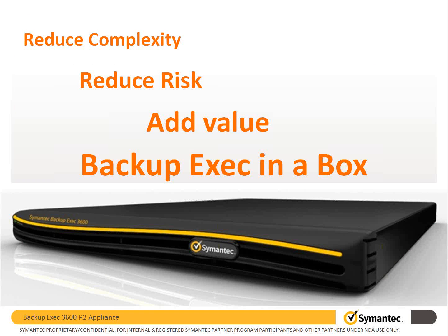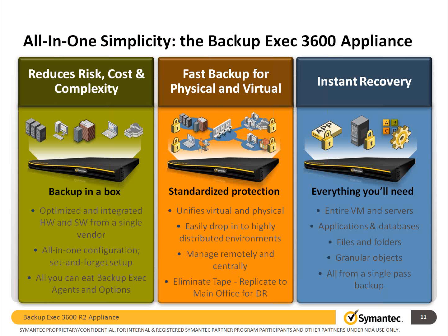The Backup Exec 3600 appliance is available in two forms: the Essential Protection Appliance and the Total Protection Appliance. The physical hardware on both is identical and both have unlimited agents, so you can back up as many servers as you want depending on the box's capacity. However, the more expensive Total Protection comes with additional licensing enabling you to connect two or more appliances together, run them in a parent-and-child configuration, and replicate data from one box to the other — potentially eliminating the need for tape and ensuring all data is on the secondary appliance in the event of a disaster.